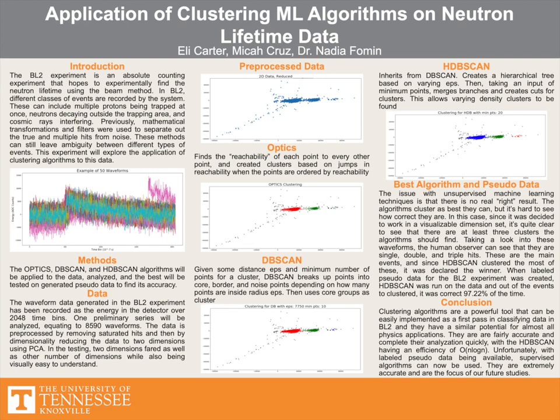HDBSCAN follows from DBSCAN, but it only takes minimum points. It creates a hierarchical tree diagram that analyzes all epsilon values, then makes a cut based on an internal algorithm that merges some branches so that they reach min points. This allows for varying density groups to be found since there is no set epsilon. The graph reflects that too.